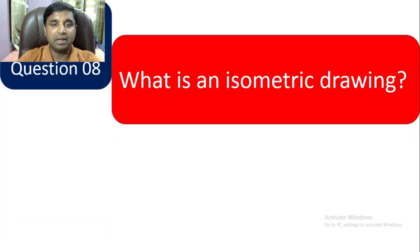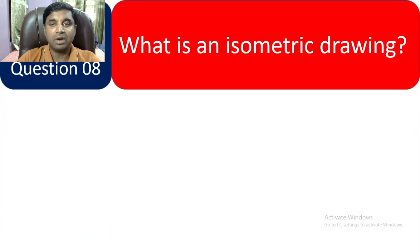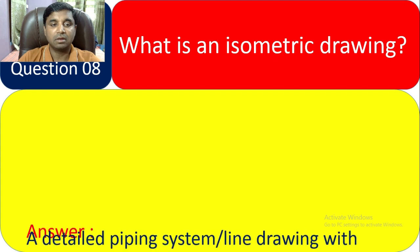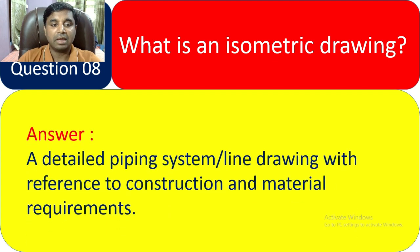Question 8: What is an isometric line? An isometric line is a detailed piping system line drawing with a reference to construction and material requirements.